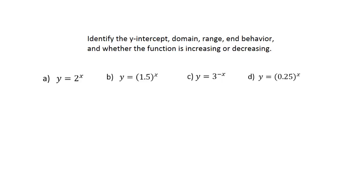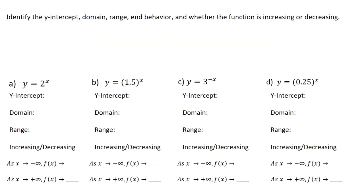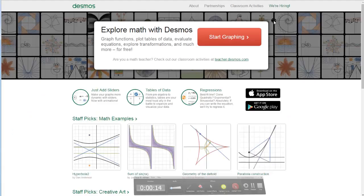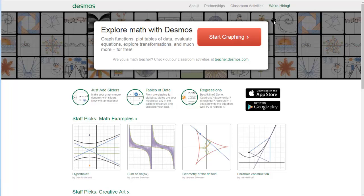In this video we're going to be checking out a few exponential functions and we need to call out all the key features. Some of these key features are going to be the y-intercept, domain, range, whether or not it's increasing or decreasing, and then we'll also do the end behavior. To help us out with all this I'm going to go to desmos.com and use that graphing calculator to graph these functions.